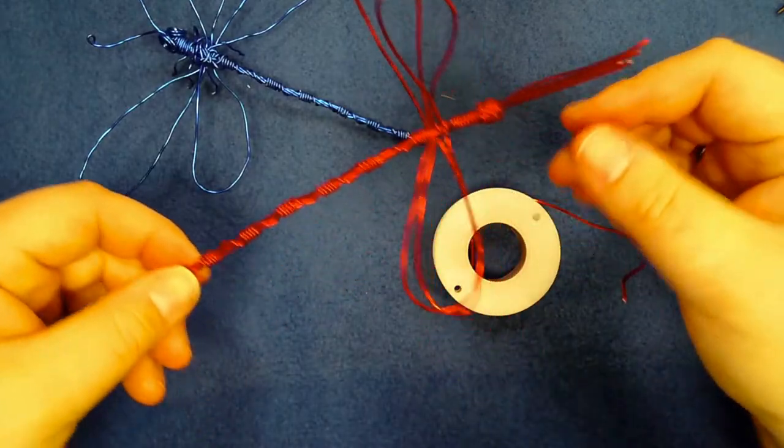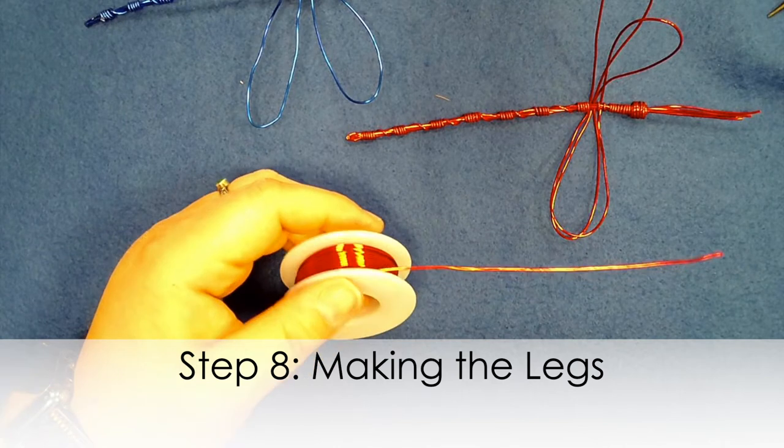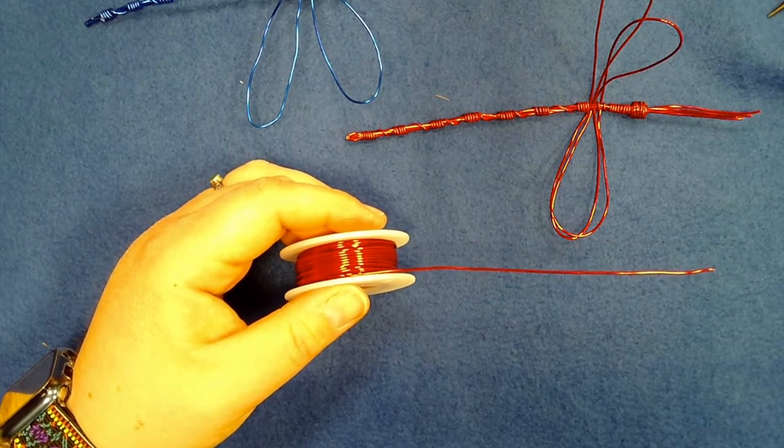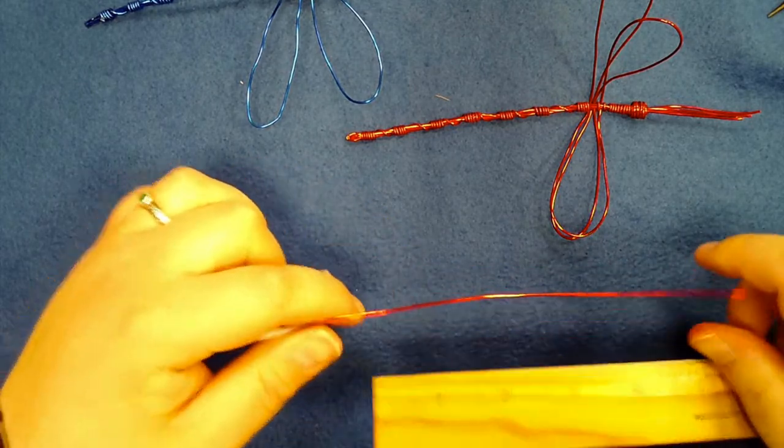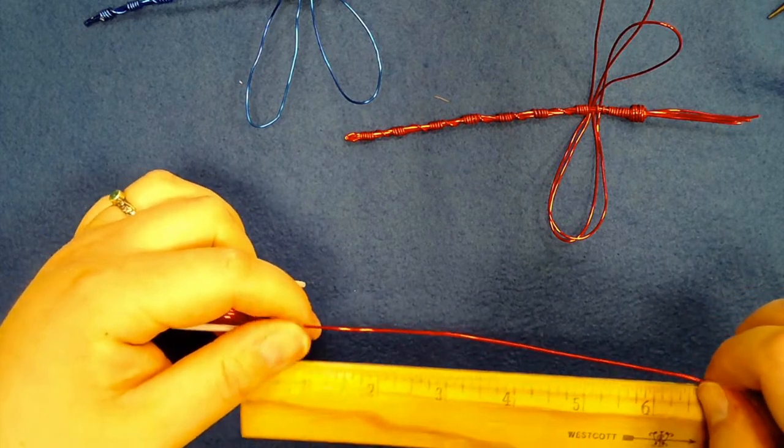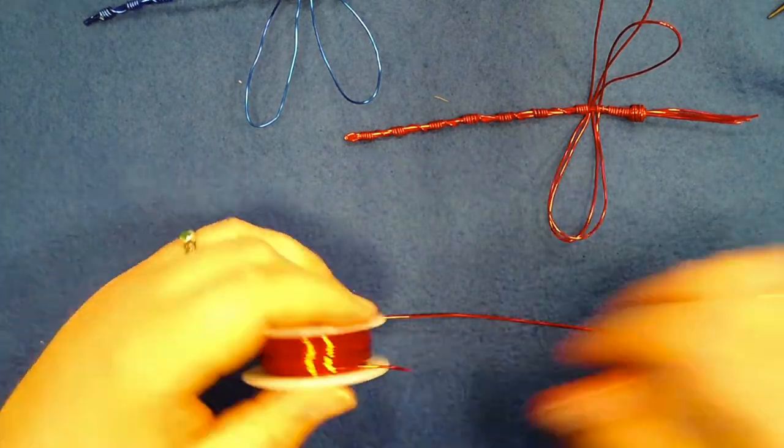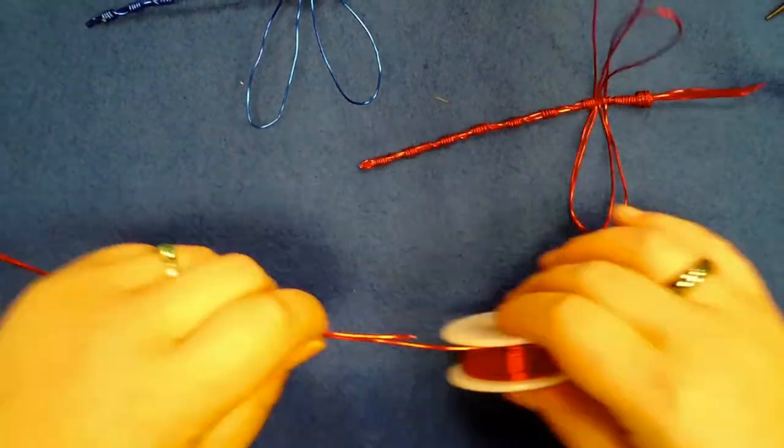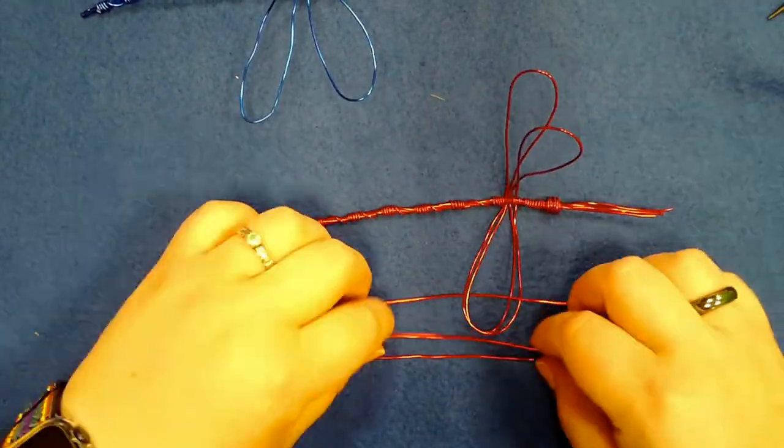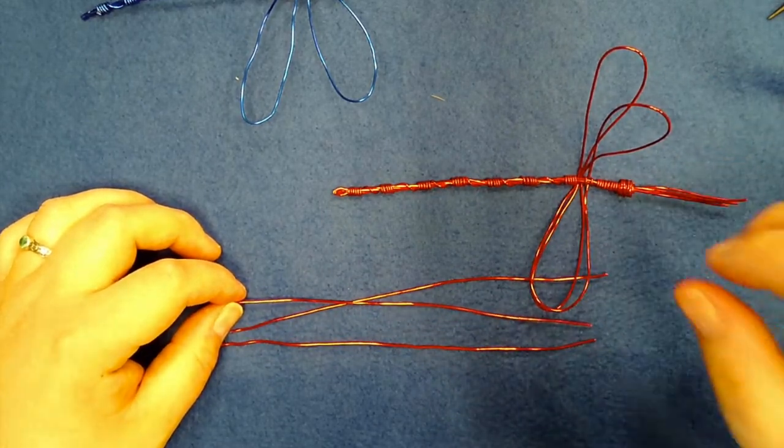Okay, so this is the dragonfly body so far. Now, you want to get your wire out again and you want to measure out three seven inch pieces of wire. So let's measure out one. And then I'm going to use the one as a tool to measure out the rest. So this is seven inches. These are going to be the legs and ultimately the decorative portion to help hold the wings of the dragonfly.